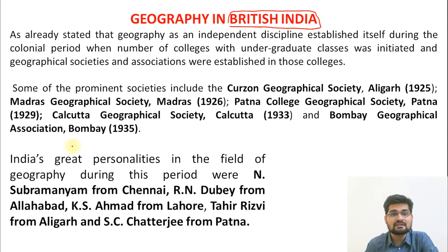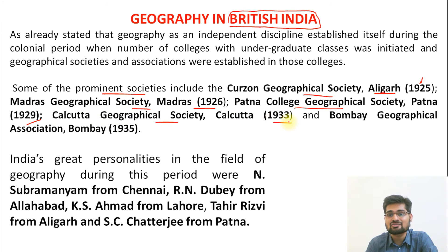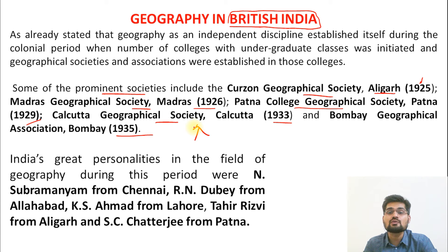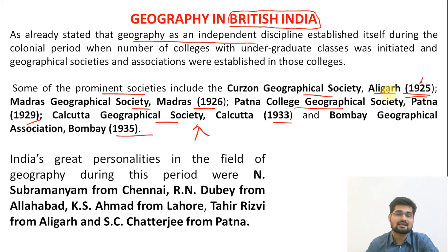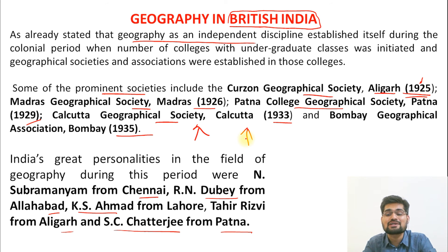Geography became part of the formal education system in India through the British colonizers. Many prominent geographical societies were created in British India: Curzon Geographical Society at Aligarh in 1925, Madras Geographical Society in 1926, Patna College Geographical Society in 1929, Calcutta Geographical Society in 1933, and Bombay Geographical Association in 1935. These societies promoted geography as an independent discipline from the 1920s. Key personalities who were building blocks of these societies included N. Subramanyam, R.M. Dubey, K.S. Ahmed, Tahir Rizvi, and S.C. Chatterjee.